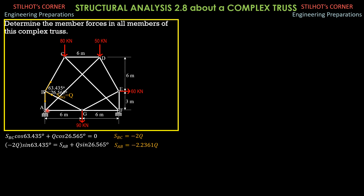We then proceed to joint A. Summation of forces X equals 0, so AX is 60 kN. I leave to you to compute the vertical reaction. Summation of moments about F equals 0: AY times 12 plus 60 times 3 equals 50 times 3 plus 90 times 6 plus 80 times 9. So you'll get AY equals 102.5 kN. Likewise, summing moments about A equals 0: RF times 12 equals 80 times 3 plus 90 times 6 plus 50 times 9 plus 60 times 3. You will get RF equals 117.5 kN.